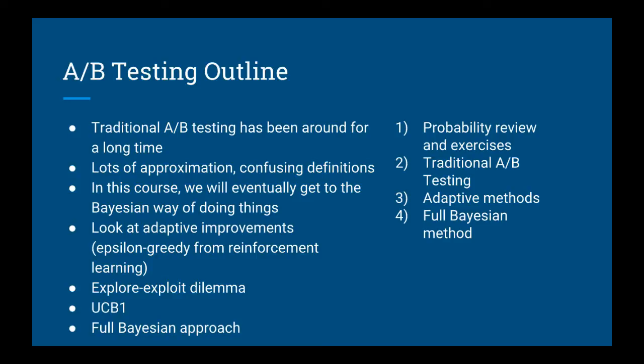First, we'll see if we can improve on traditional A-B testing with adaptive methods. These all help you solve the explore-exploit dilemma. You'll learn about the Epsilon Greedy algorithm, which you may have heard about in the context of reinforcement learning. We'll improve upon that with a similar algorithm called UCB1, and finally we'll improve on both of those by using a fully Bayesian approach.